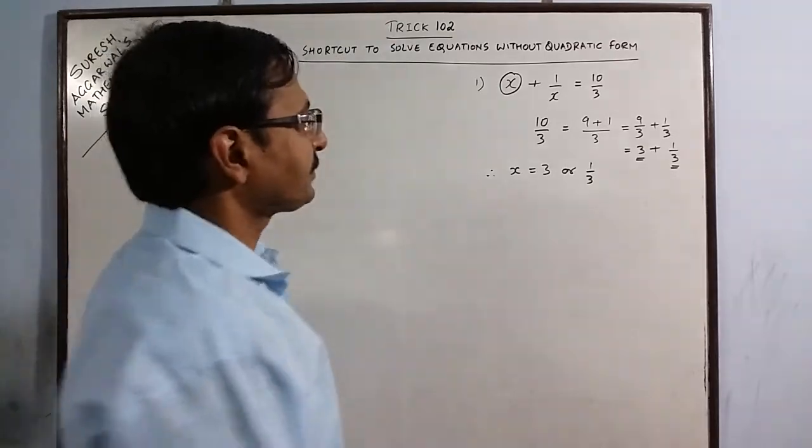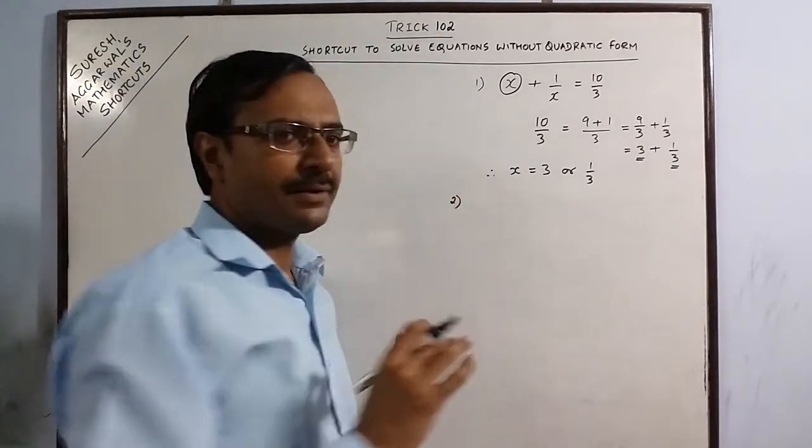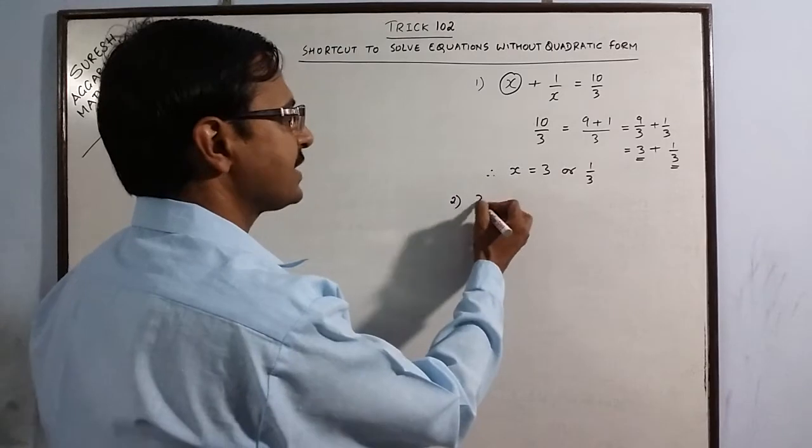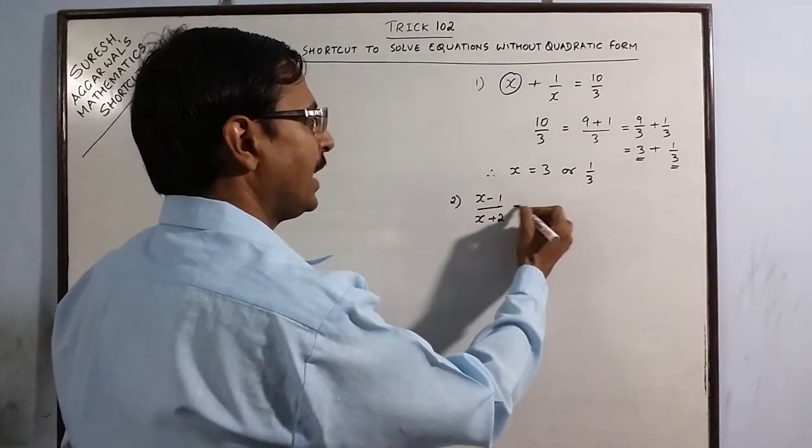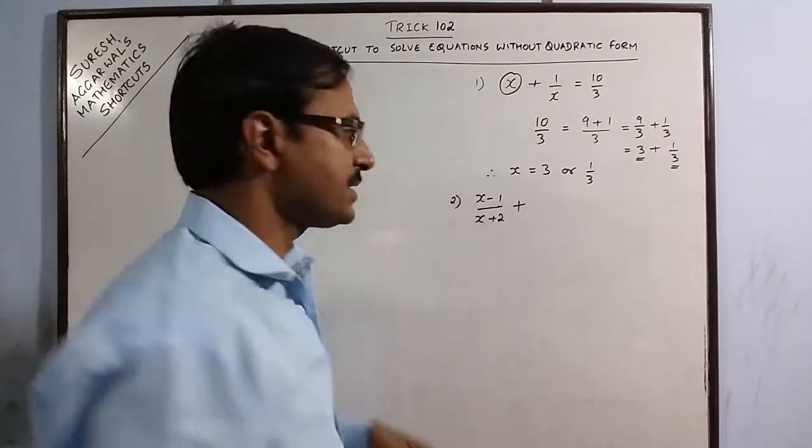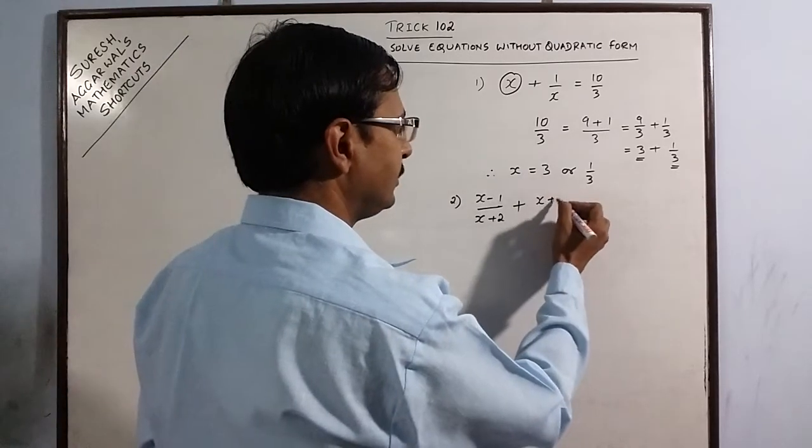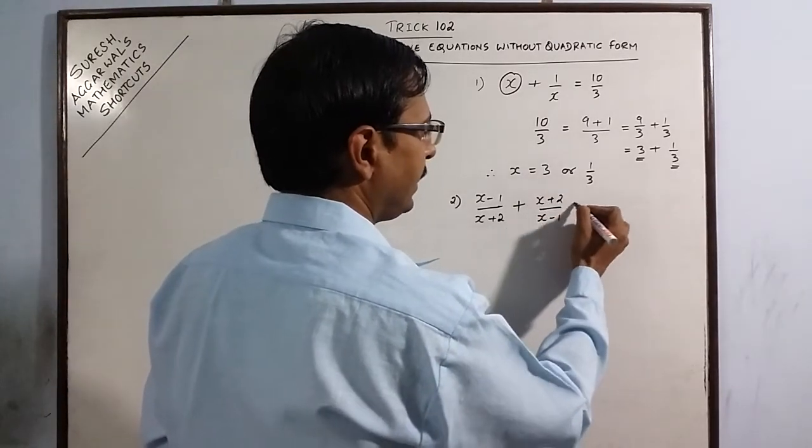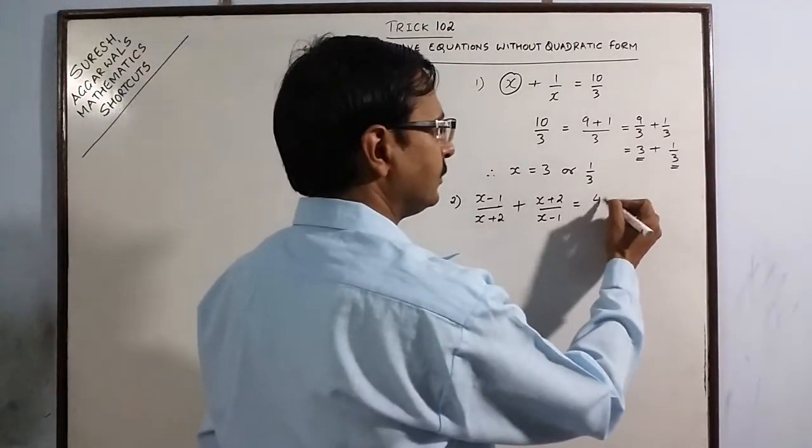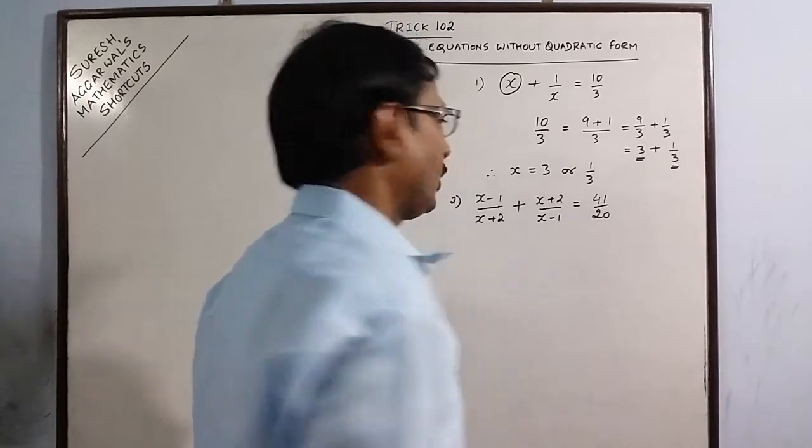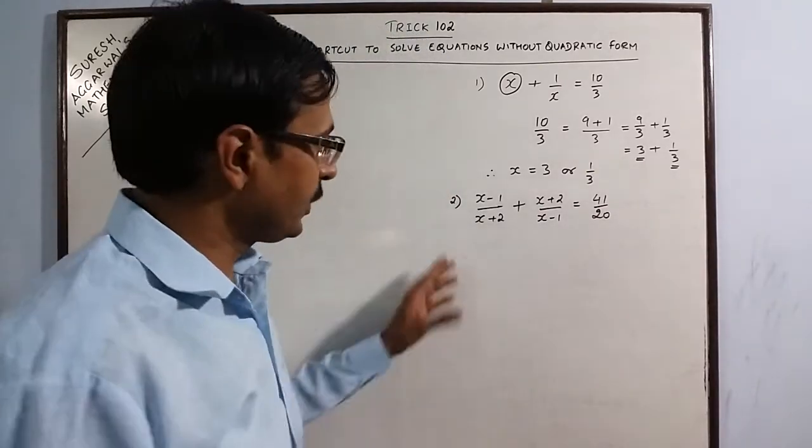Now, let us complicate this problem a little bit. Say, we have x minus 1 upon x plus 2 as the first term and obviously, its reciprocal is added, and the result which you are given is 41 upon 20.